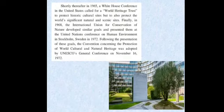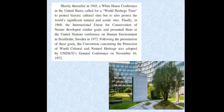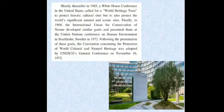Shortly thereafter, in 1965, a White House conference in the United States called for a World Heritage Trust to protect historic cultural sites, but also to protect the world's significant natural and scenic sites. Finally, in 1968, the International Union for Conservation of Natural Resources developed similar goals and presented them at the United Nations Conference on Human Environment in Stockholm, Sweden in 1972. Following the presentation of these goals, the convention concerning the protection of world cultural and natural heritage was adopted by UNESCO's General Conference.